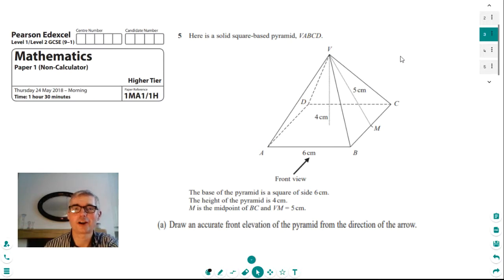So we're now into question five. Question five starts off being a question about drawing front elevations. You can also get asked to draw a plan view which would be from the top, or you could be asked to draw a side elevation which would be viewing it from the side.